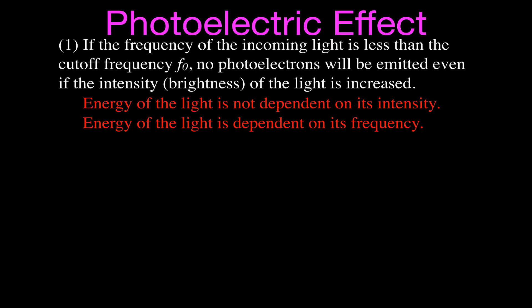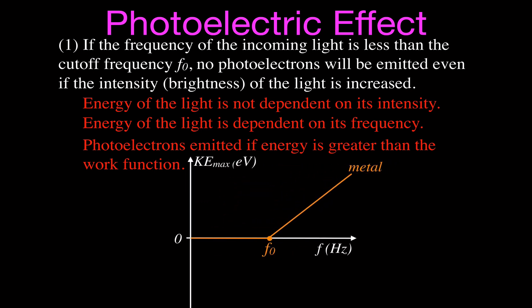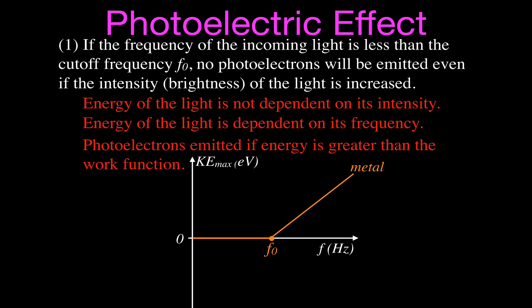The energy and frequency are directly related to each other — increase the frequency, increase the energy. Photoelectrons will be emitted if the energy of the incoming light is greater than the work function. Looking at the graph, at lower frequencies we're below the cutoff frequency, meaning the light doesn't have enough energy to release any photoelectrons. But at the cutoff frequency, the incoming light has enough energy to release some photoelectrons.